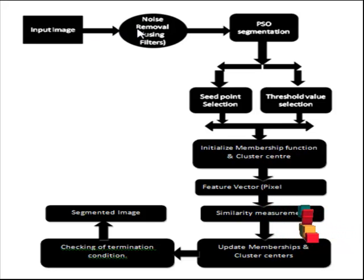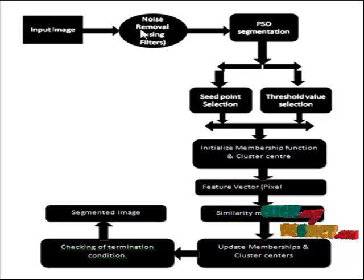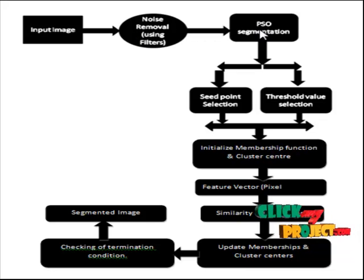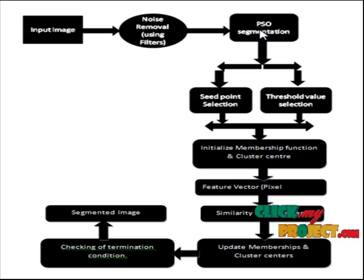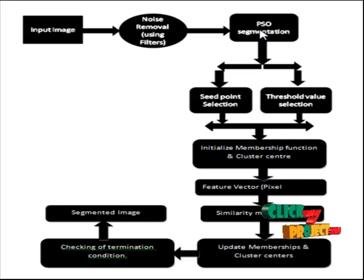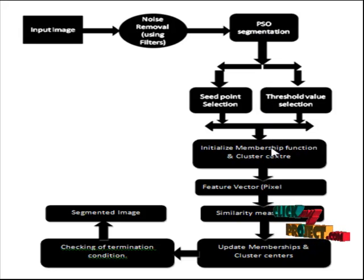After filtering these images, we pass them to the PCO algorithm. In PCO, it selects the seed points and extracts the threshold value of that pixel. After that, we initialize the membership function for fuzzy.